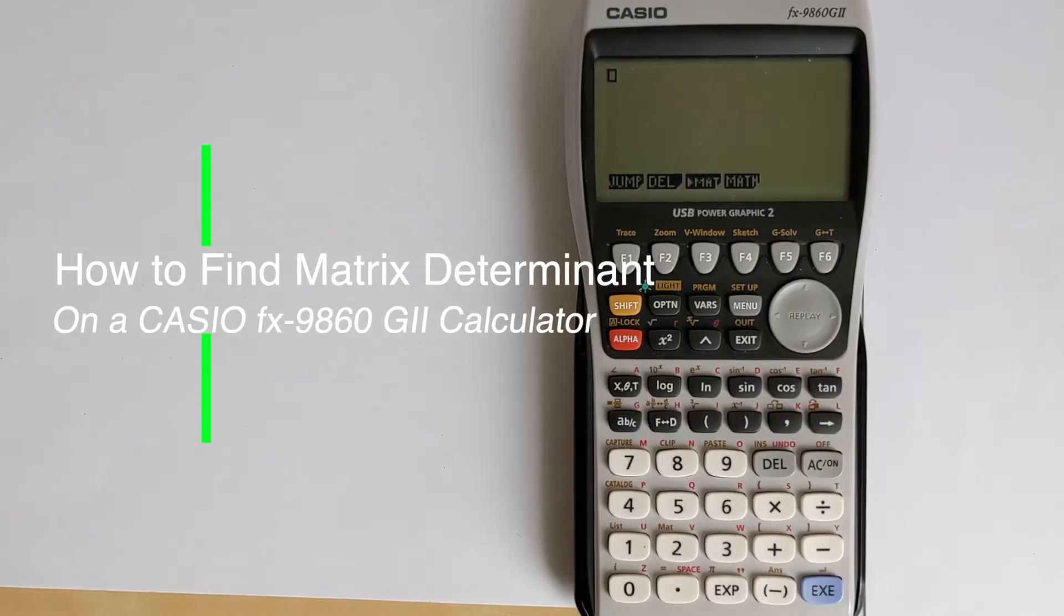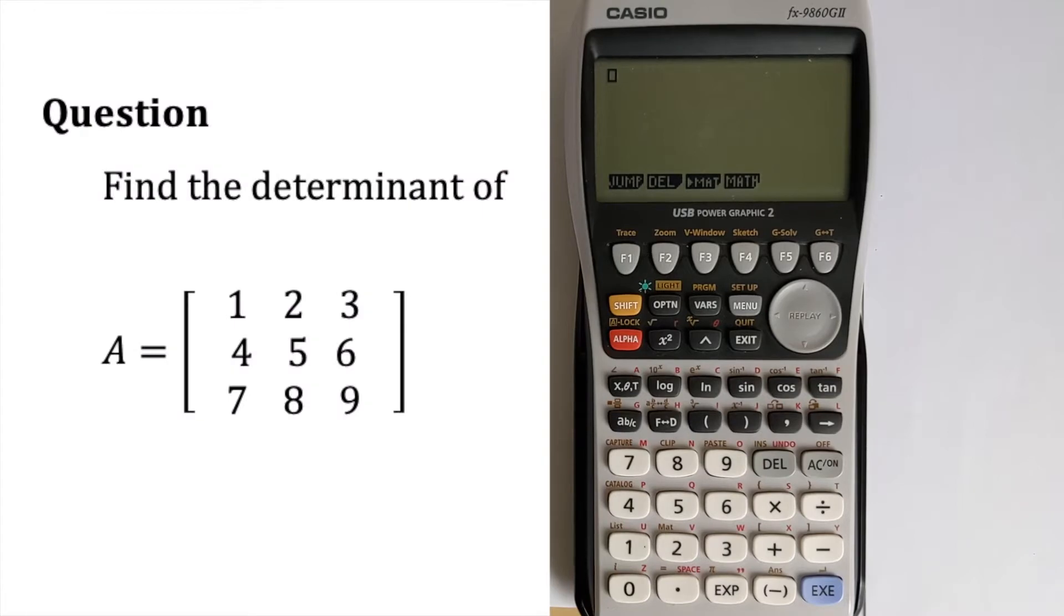So we're going to find the determinant of the matrix A equals just 1, 2, 3, 4, 5, 6, 7, 8, 9 in a 3 by 3 matrix.